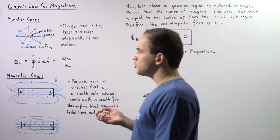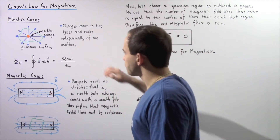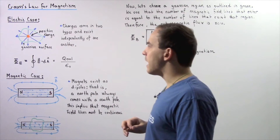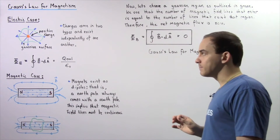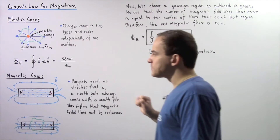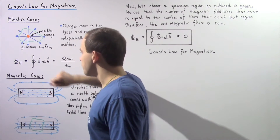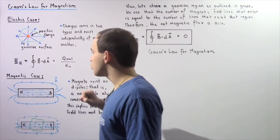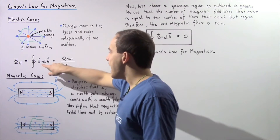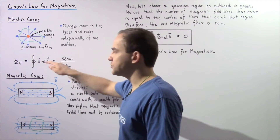Let's suppose we choose a surface known as the Gaussian surface. The Gaussian surface is outlined by the following green region. We know by Gauss's Law that our electric flux is equal to our closed integral of the dot product of our electric field and our infinitely small area vector, dA.